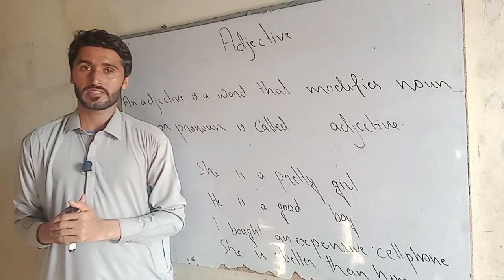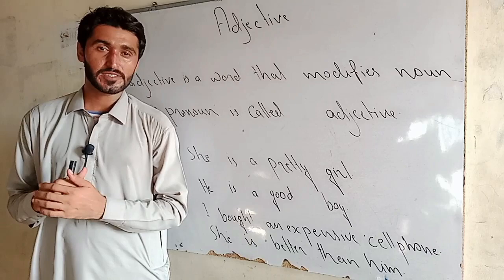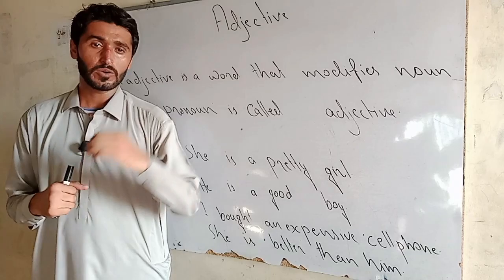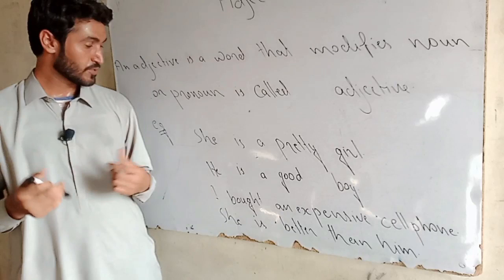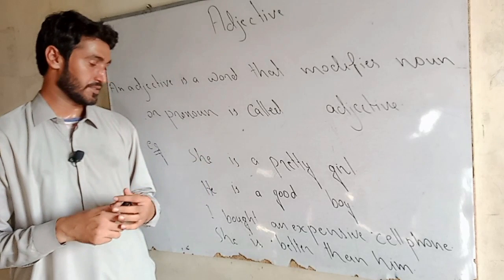What is an adjective? An adjective is a word that modifies a noun or pronoun. Adjective tells us how something is — by adjective we become aware about the goodness or badness of things. By adjective we become aware about the quality of things. I have put some examples here where I will tell you about the adjectives.